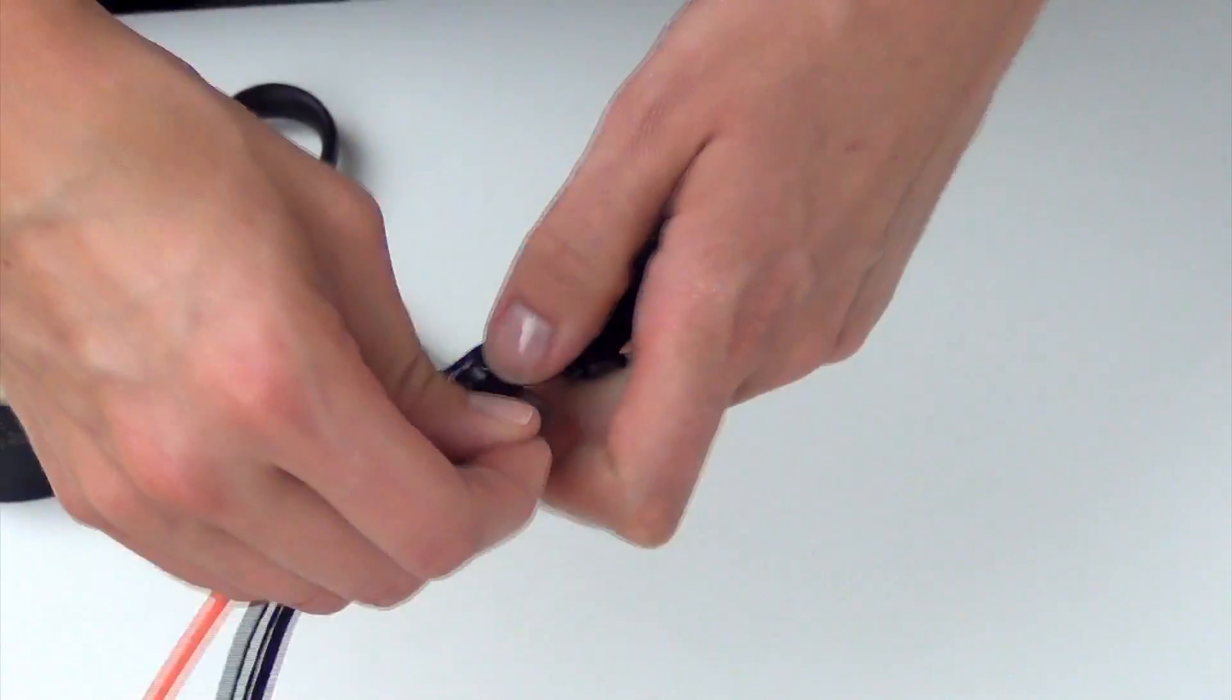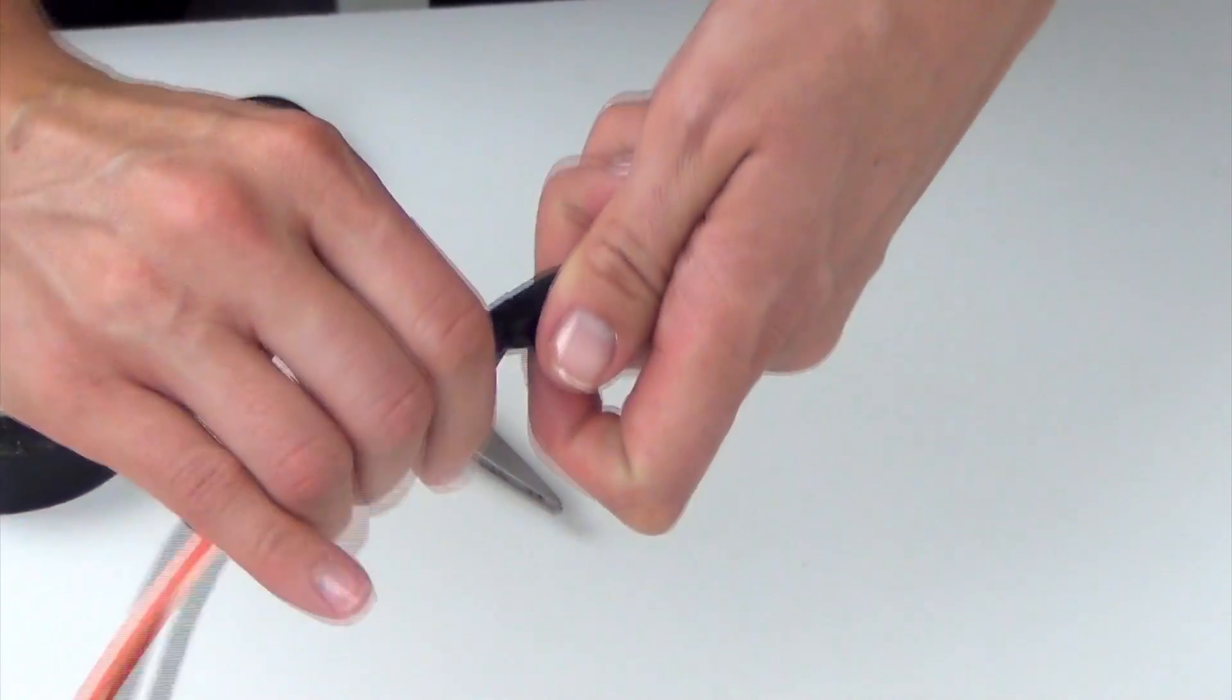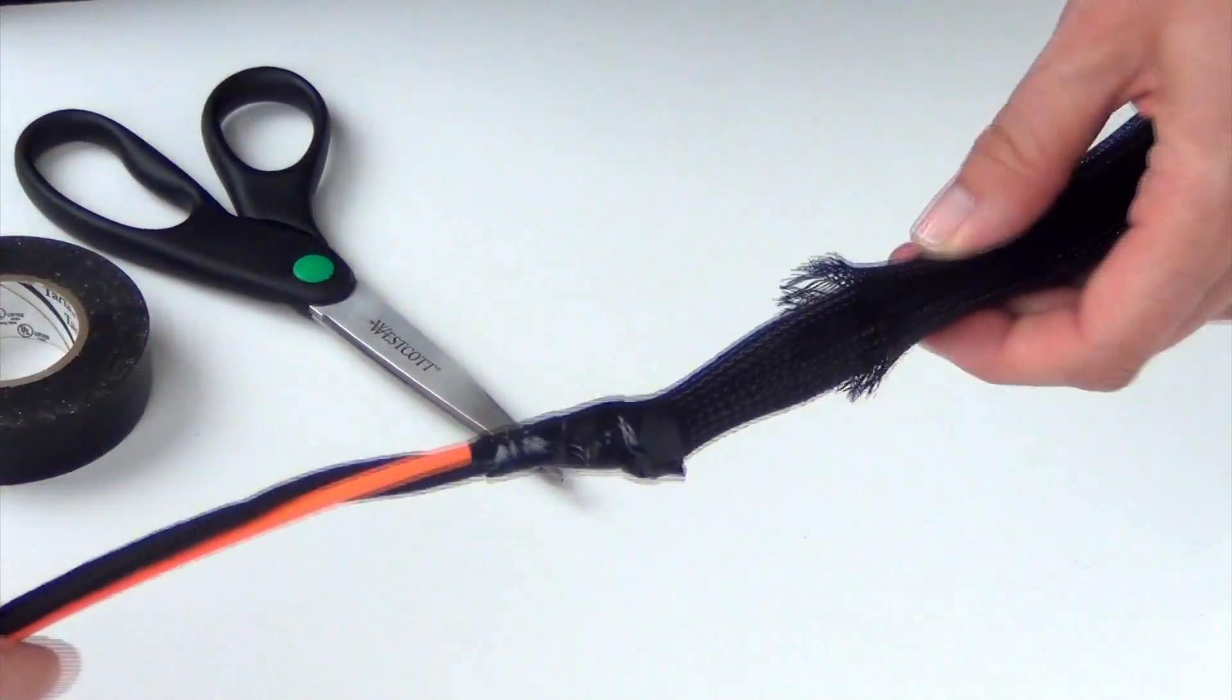Also, we've pre-measured a piece of tape, but you may find it easier to use the entire roll to wrap and then cut the tape from the roll.